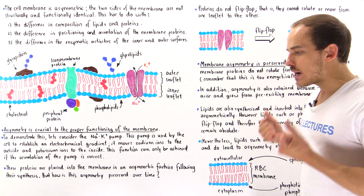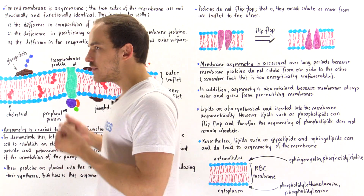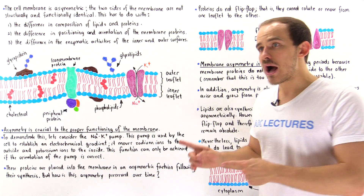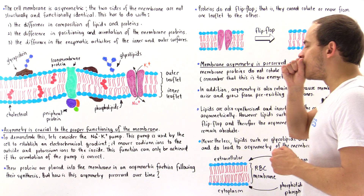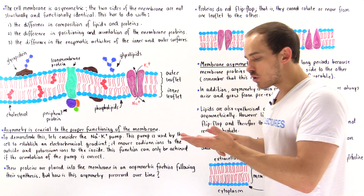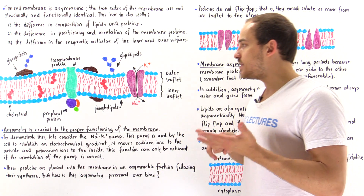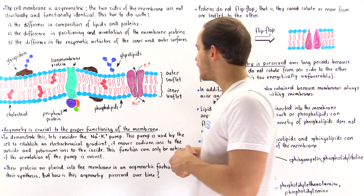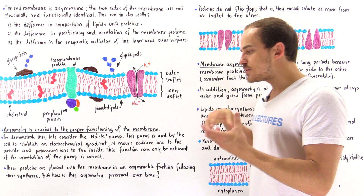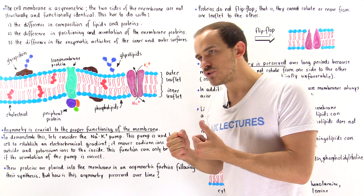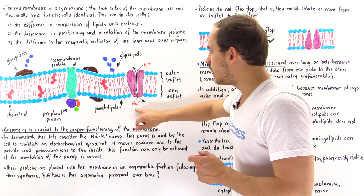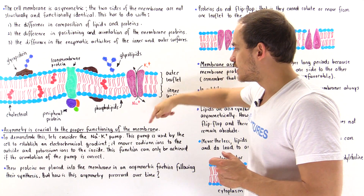Why is asymmetry so prevalent? Every single plasma membrane is basically asymmetric. Well, asymmetry is actually crucial for the proper functioning of that membrane. To demonstrate this, let's study the sodium-potassium ATPase pump found in every single cell of our body. It is a pump that utilizes ATP molecules to create an electrochemical gradient, pumping sodium ions to the outside and potassium ions to the inside.